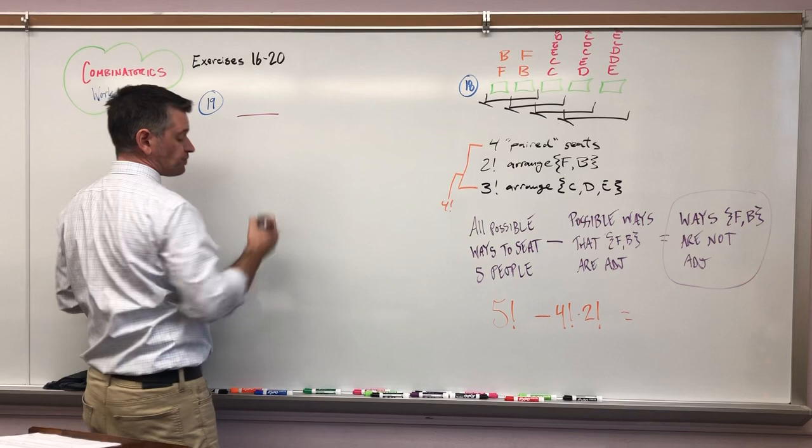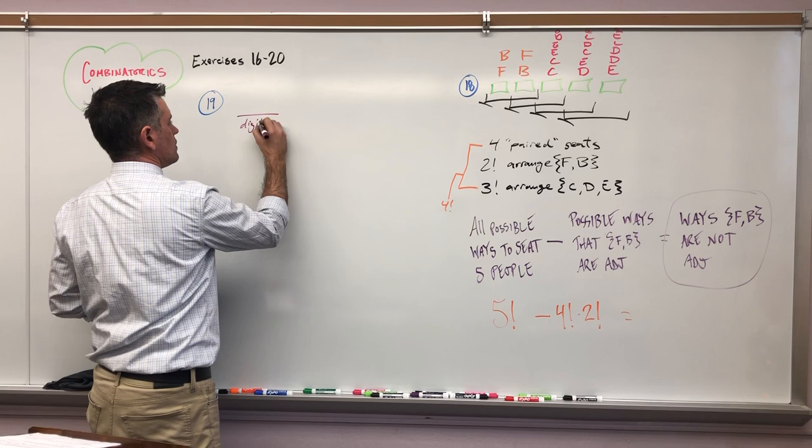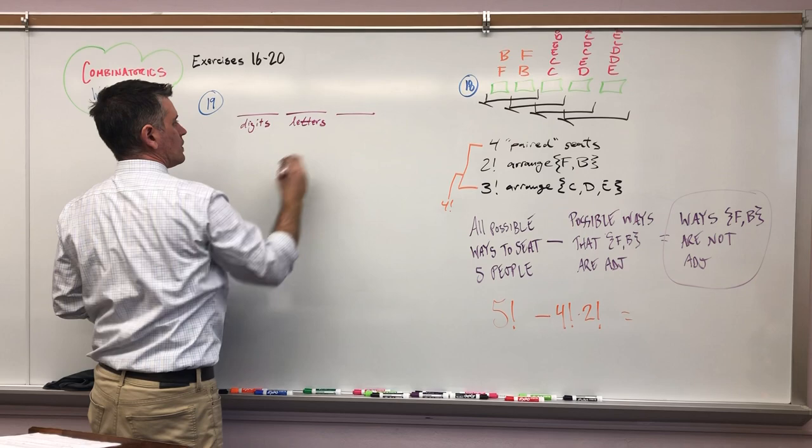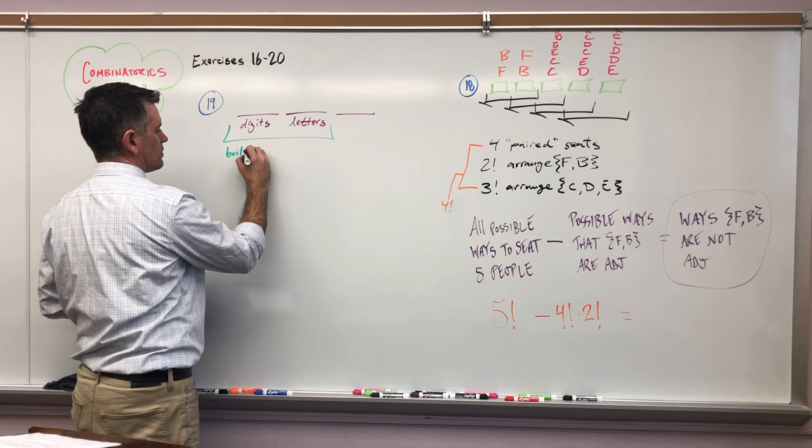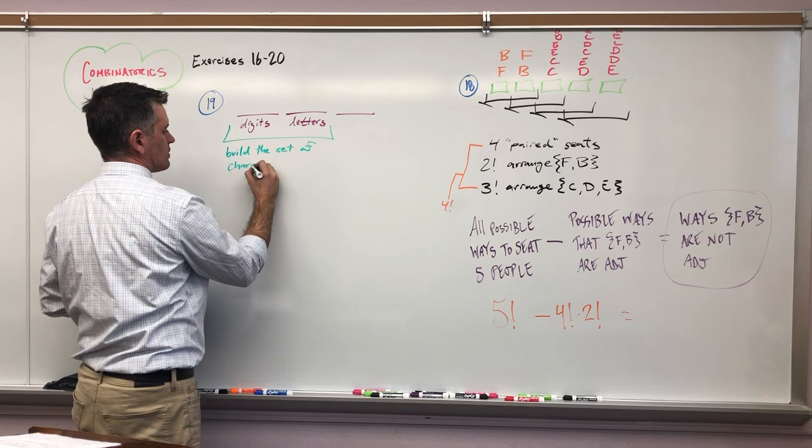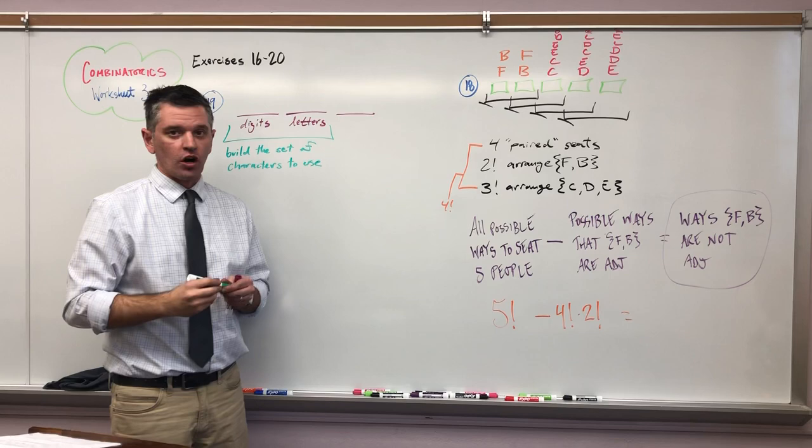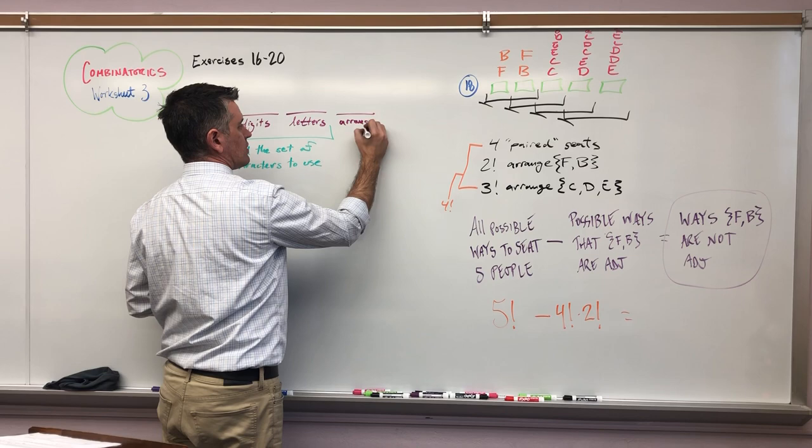I want to do the following - what order do they go in, digits then letters? So I want to begin by choosing the seven things that I want. Essentially, I'm going to build a set.